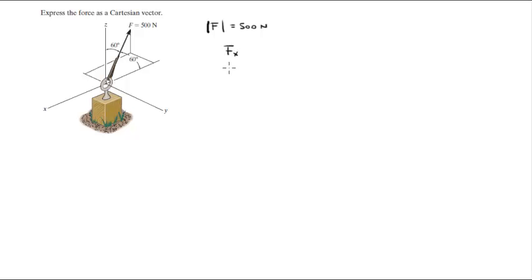You know you have an X component, a Y component, and a Z component. You got the angle that it forms with the Z, so that's very easy to find already. It's the F times the cosine of 60.